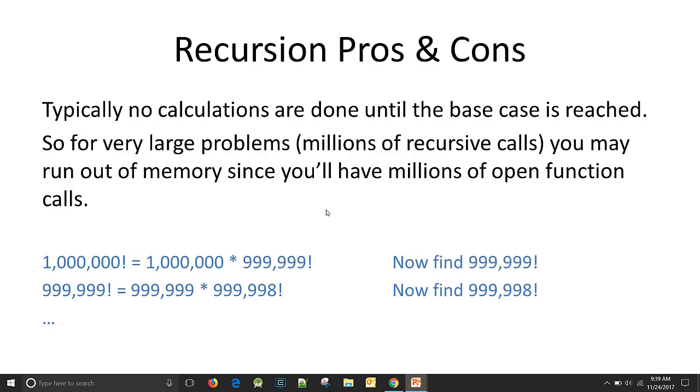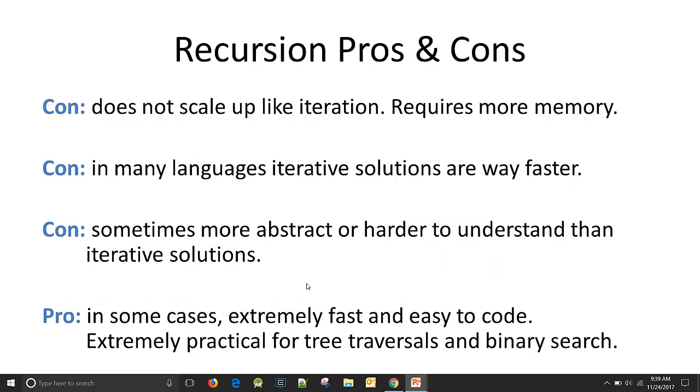So recursion pros and cons. Typically, no calculations are done in a recursive solution until you reach that base case. And until then, you're opening up a whole bunch of recursive function calls, which can take up some memory. So if you have millions of pieces of data in your data set, you're opening a lot of function calls and you could run out of memory that way. So that's one of the cons. It does not really scale up like iteration does. It requires more memory. So in some very large problems, recursion may not be a good solution.